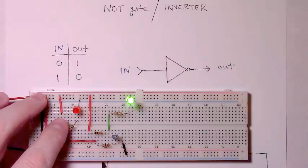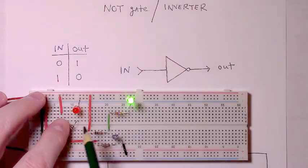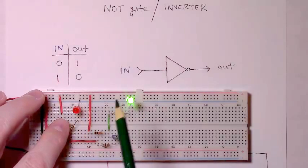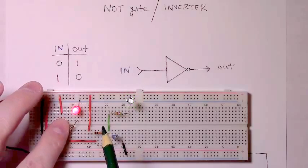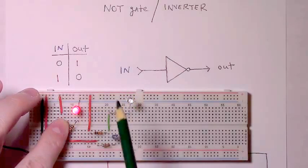Once we're finished, at the moment we have a low on the input, we have a high on the output. If we push our momentary button, we have a high input and a low output.